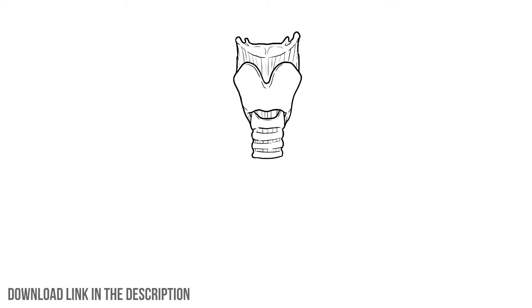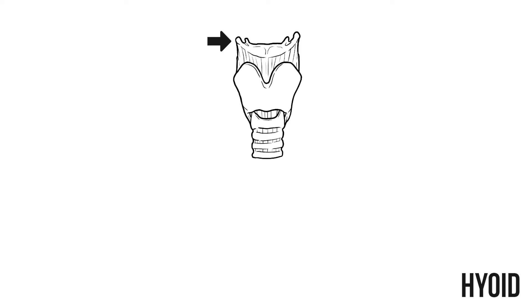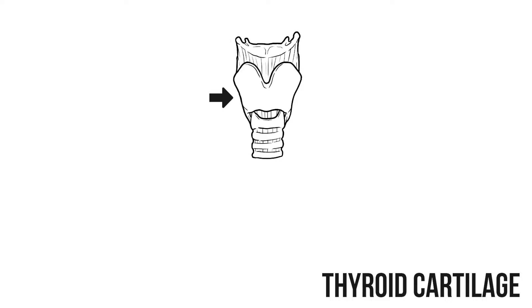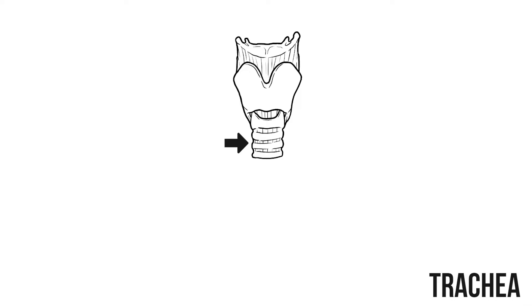We're going to start with an anterior view of the larynx which you can download from the links below. At the top is the hyoid bone, then the thyroid cartilage, cricoid cartilage and the trachea hanging underneath.